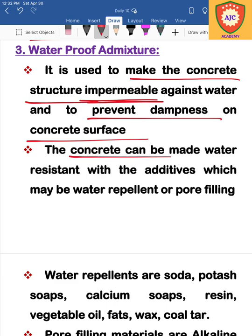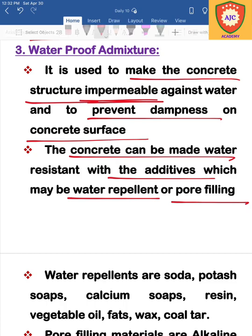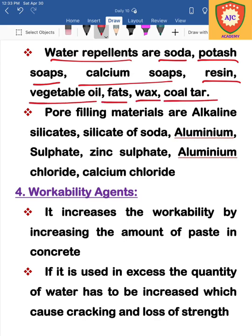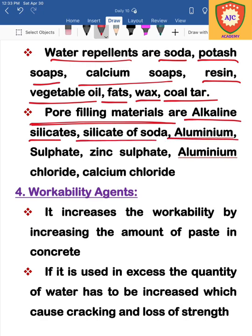We add water repellent admixtures or pore-filling additives to the concrete. Water repellent materials include soda, potassium, calcium, resin, vegetable oil, fats, wax, coal tar. Pore-filling materials include alkaline silicate, silicate of soda, aluminum sulfate, zinc sulfate, aluminum chloride, and calcium chloride. These constitute the waterproof admixture.